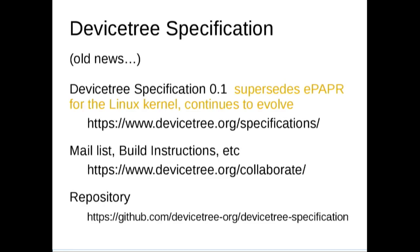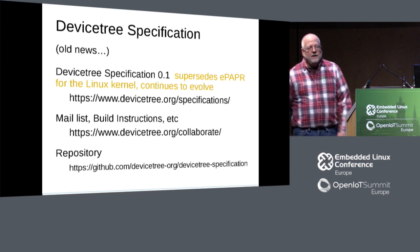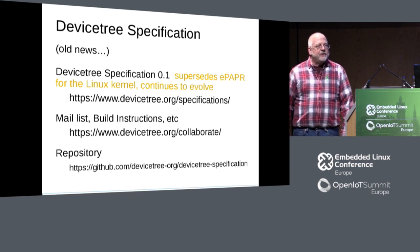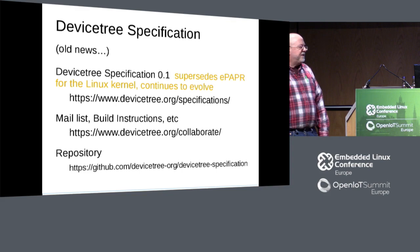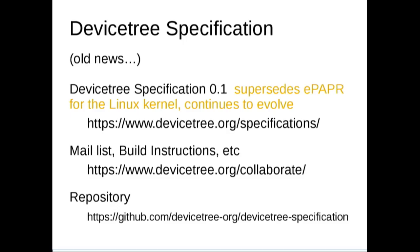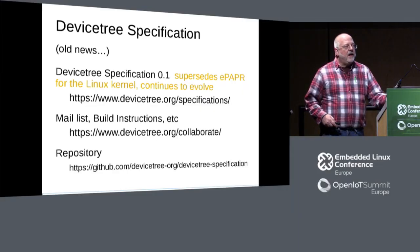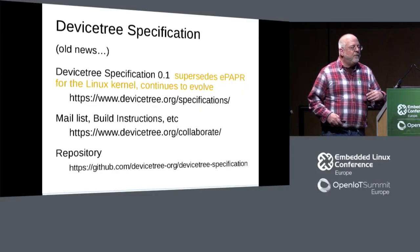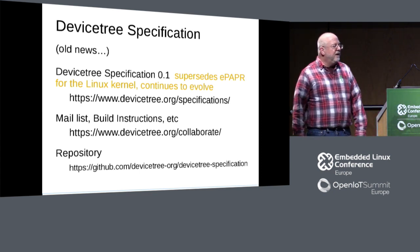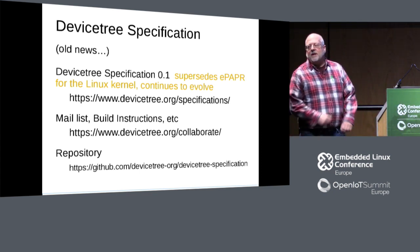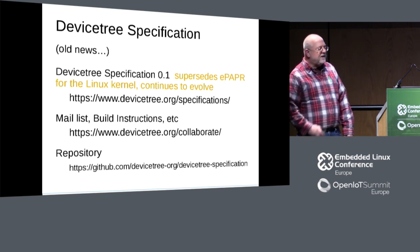As a reminder, the project no longer uses the ePAPR as the reference source backing up bindings — they now use the Device Tree Specification. It was created by extracting appropriate material from ePAPR, excluding inapplicable chapters, with some wordsmithing. It's intended to evolve over time and provide more bindings information in a central location, but progress on modifying it has been very slow over the last year.